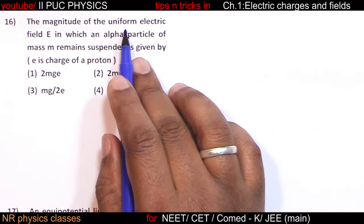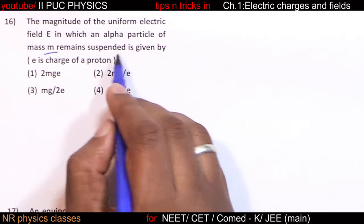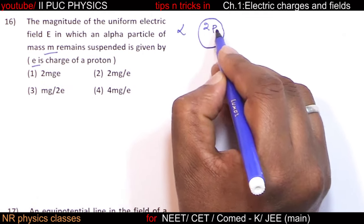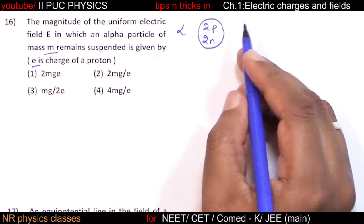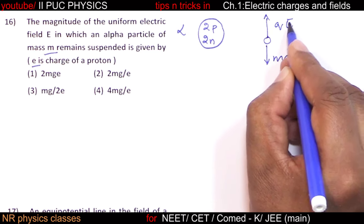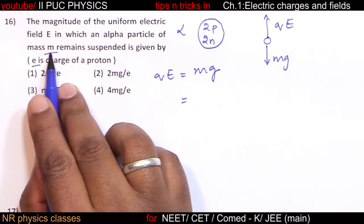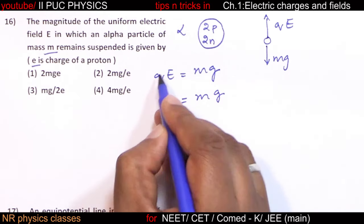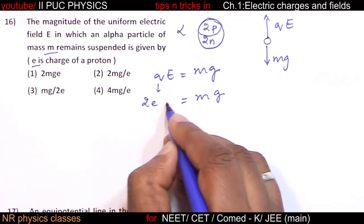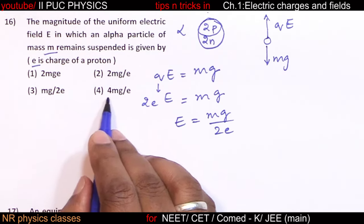The magnitude of the uniform electric field in which an alpha particle of mass m remains suspended. An alpha particle has two protons and two neutrons. Remaining suspended means QE = mg. The charge is 2e (only two protons contribute charge). Therefore, electric field E = mg divided by 2e.